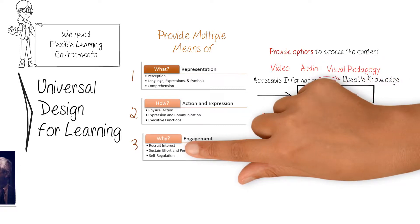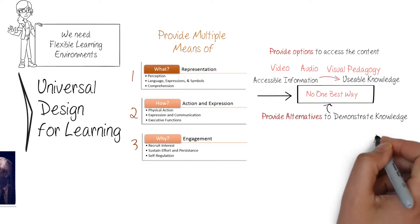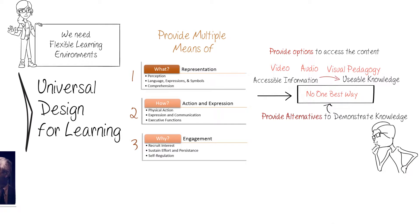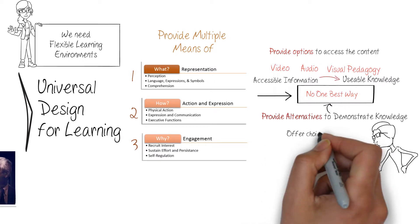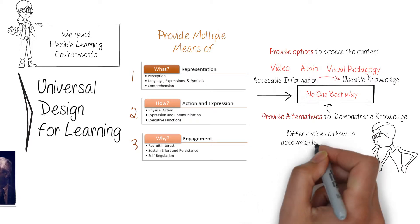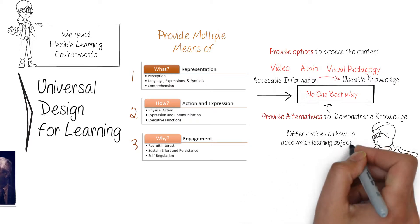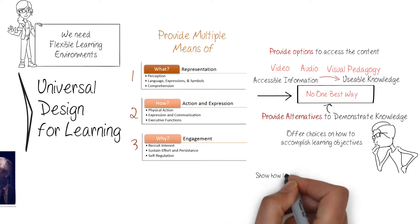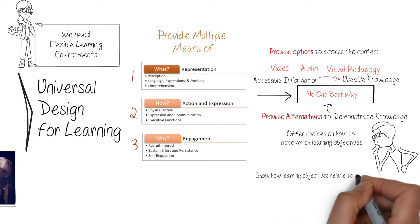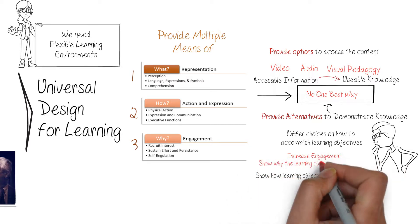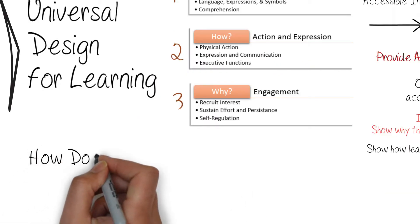Principle 3: Provide multiple means of engagement. Effective learning environments tap into learners' interests, challenge them appropriately, and motivate them to learn. By challenging students and recruiting their interests, the course will help sustain their efforts and persistence. Allowing options and offering multiple means of engagement affords students the option to self-regulate their learning and choose the methods that work best for them.